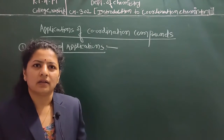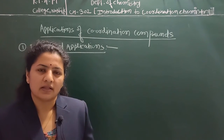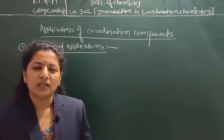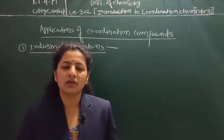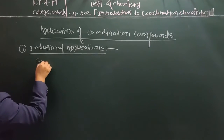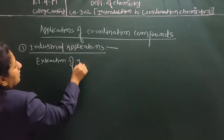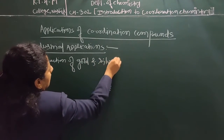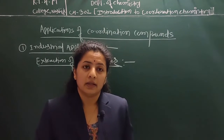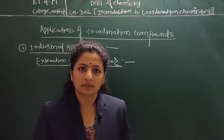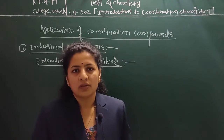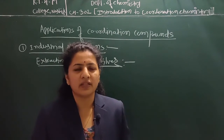Gold and silver are very expensive metals and it is very difficult to separate them because in nature they are found in very small amounts in combined state. They also have wide applications in various fields. In industrial application we discuss the extraction of gold and silver. When metals are formed in combined state in nature, it is very difficult to separate them from their respective ore, so we treat the ore with aqueous solution of cyanide.